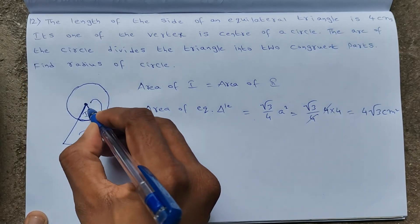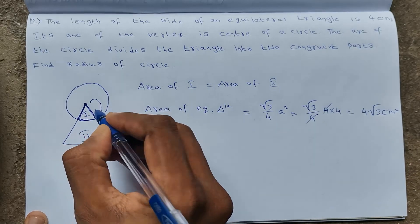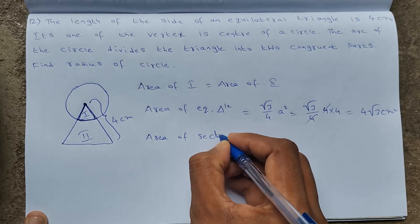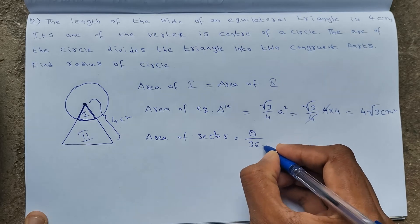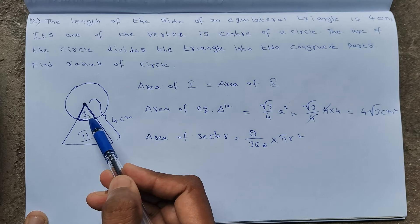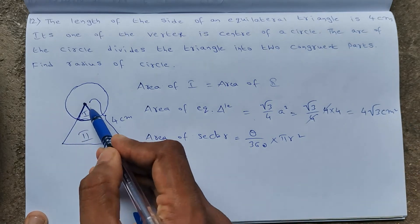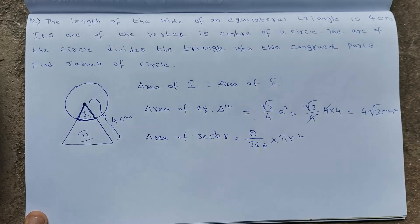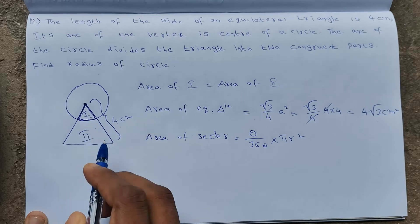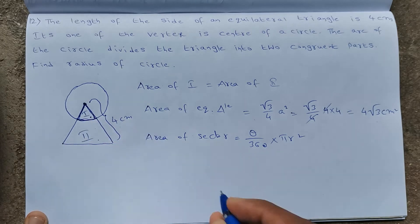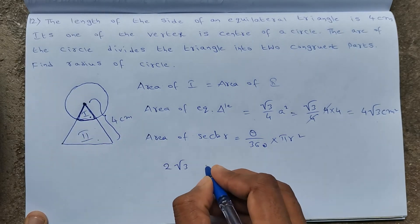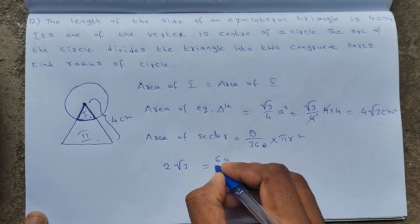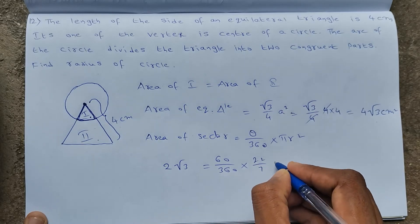Observing this part clearly — this part is a sector. The area of a sector = (θ/360) × πr². The total triangle area is 4√3 cm², and since the two parts are equal, each part has area 2√3 cm². The sector area is 2√3. In an equilateral triangle every angle is 60°, so θ = 60.